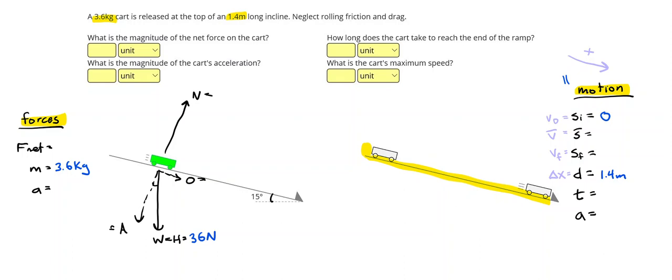So, in this case, I can start with my trigonometry because I have two parts of the triangle. To get my opposite side, I'm going to use h sine theta or 36 sine 15 giving me 9.32 newtons.